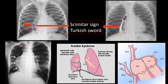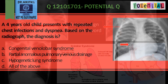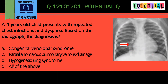This hypogenesis of the right lung is seen more obviously in this X-ray, where you have the smaller right lung, the scimitar sign, and mediastinal shift to the right side. The correct answer here is all of the above — that is, congenital veno-lobar syndrome, PAPVC, and hypogenetic lung syndrome. This is scimitar syndrome.